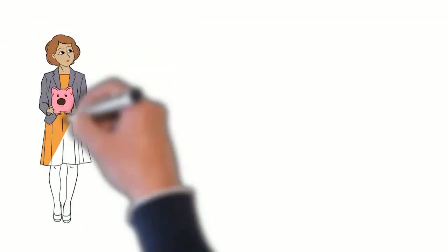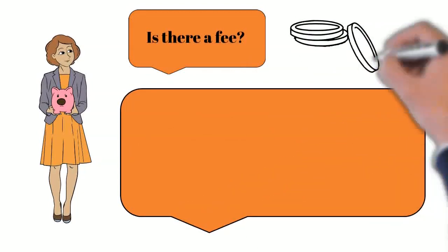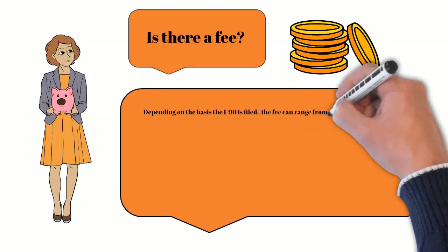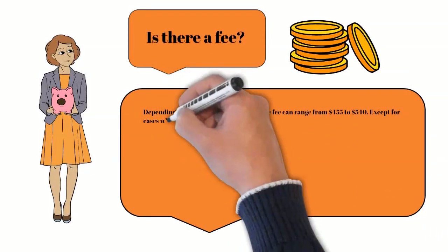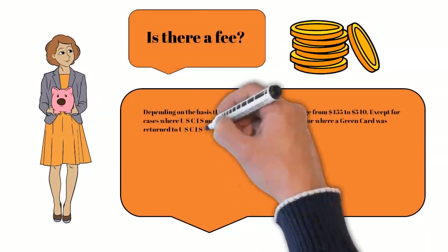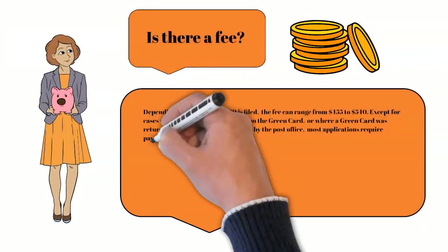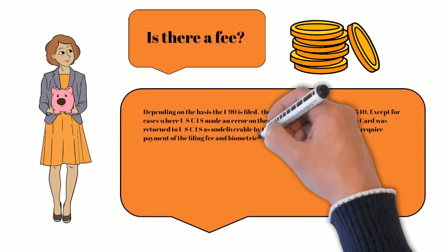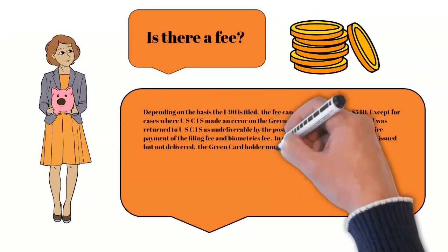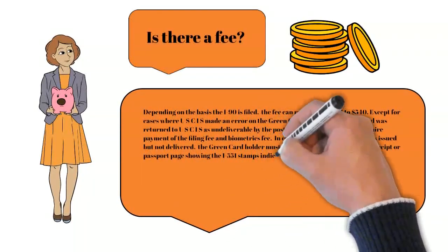Is there a fee? Depending on the basis the I-90 is filed, the fee can range from $455 to $540. Except for cases where USCIS made an error on the green card, or where a green card was returned to USCIS as undeliverable by the post office, most applications require payment of the filing fee and biometrics fee. In cases where the green card was issued but not delivered, the green card holder must provide a copy of the approval receipt or passport page showing the I-551 stamps indicating admission as a legal permanent resident.